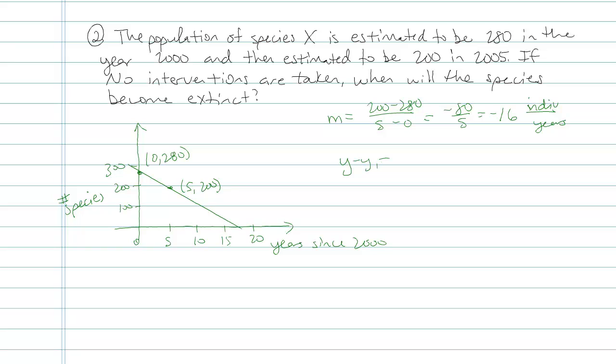Now we can use the point-slope form of the equation to find out our prediction. Y minus the y value, you can use either one. I'm going to use 0, 280 because I always think 0 is a little bit easier to work with. X minus my x value, simplifying, y minus 280 is equal to negative 16x, and then minus 0. And to get y all by itself, I would add 280 to both sides.